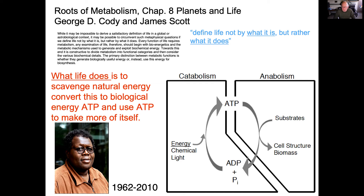There are two aspects of metabolism: catabolism and anabolism. Catabolism is the process by which metabolism converts energy to ATP using protein enzymes. Anabolism is how metabolism takes biological energy, links it to substrates, and makes self-structure biomass. Here we have a picture of the late James Scott, whose loss to science is tremendous.